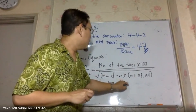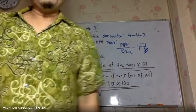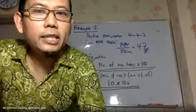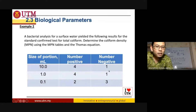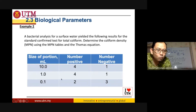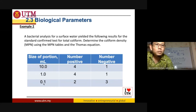Times 100, divided by the square root of ml of negative. What do they mean by ml of negative? You've got one negative: 1 times 10 is 10. The other one is also negative: 1 times 1 is 1. So 10 plus 1 is 11. And then this one negative is 3, meaning 3 times 0.1 is 0.3. So 10 plus 1 plus 0.3 gives you 11.3.